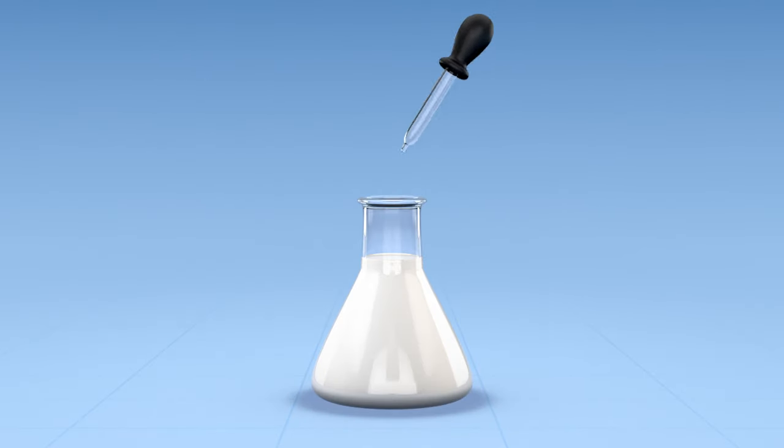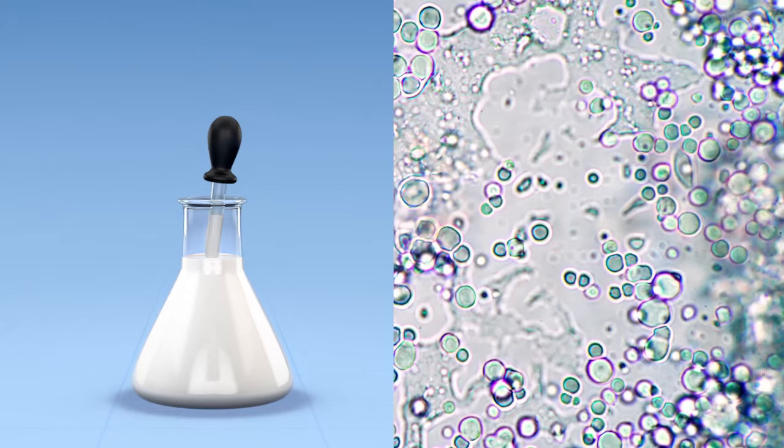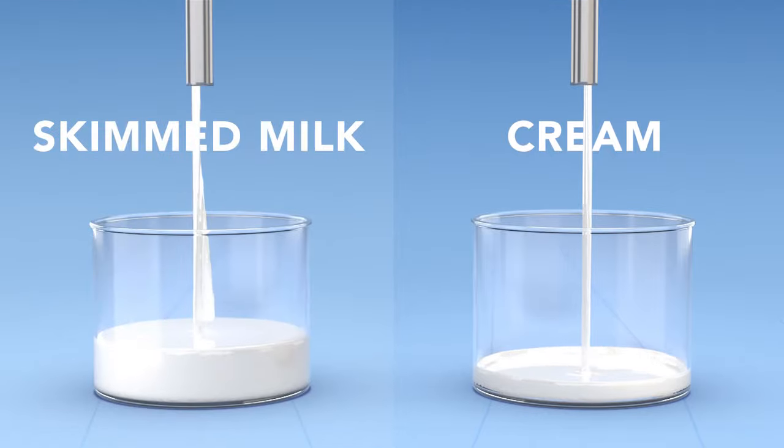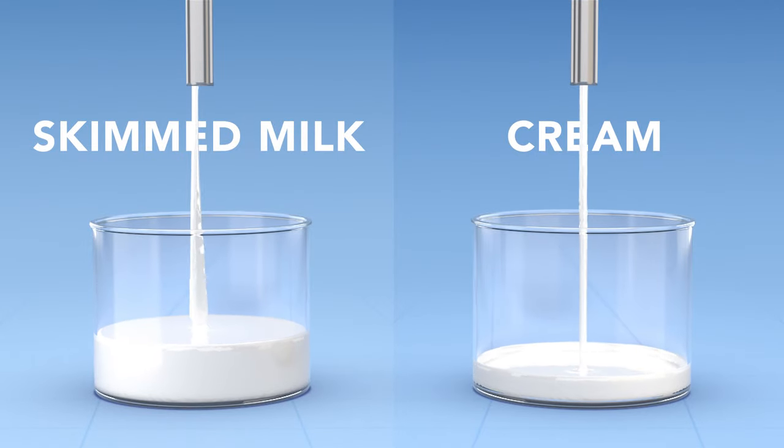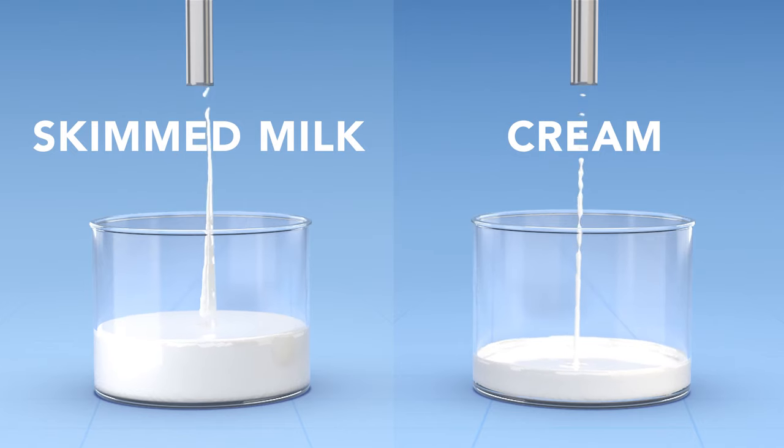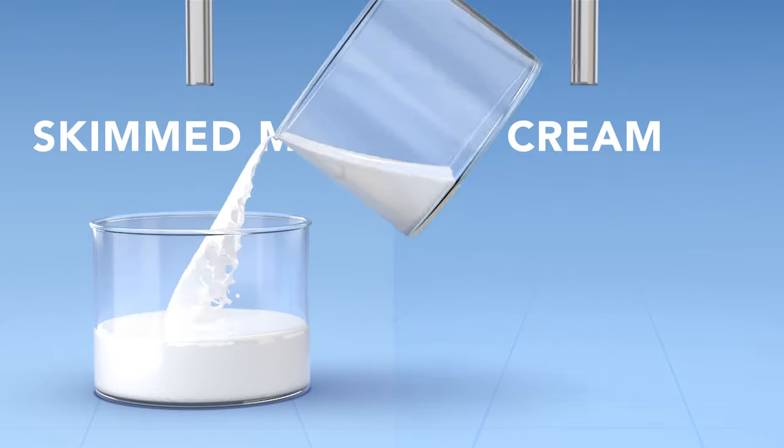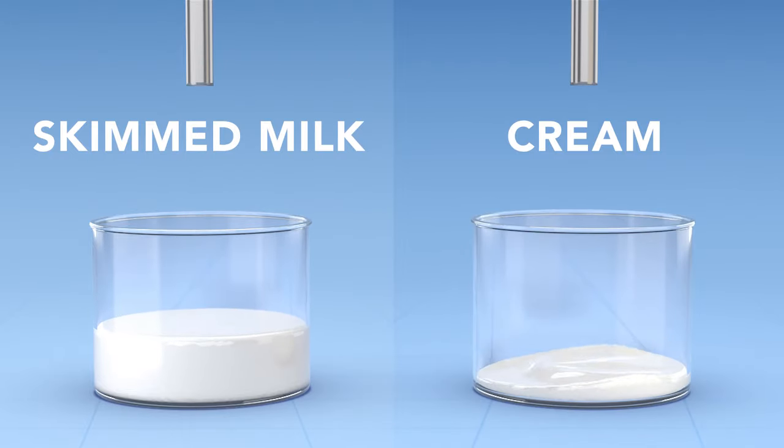First, the main ingredient milk is tested for quality, heated to kill harmful bacteria, and then separated into cream and skimmed milk in a separator. To ensure the cheese will have exactly the right fat content, a precise amount of cream is added back into the skimmed milk. This process is called milk standardization.